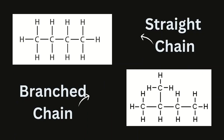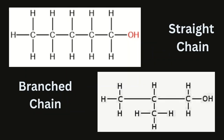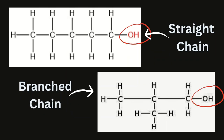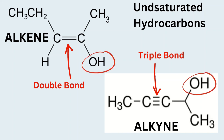Consider a carbon chain of five carbon atoms. The carbon chain may be a straight chain or a branched one. With an alcoholic functional group attached to it, these are said to be the saturated hydrocarbons. The same holds true for unsaturated hydrocarbons as well.